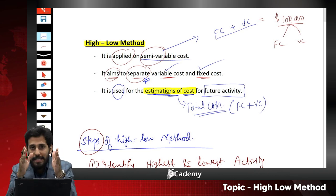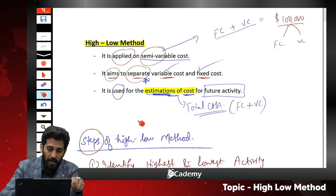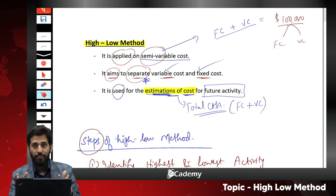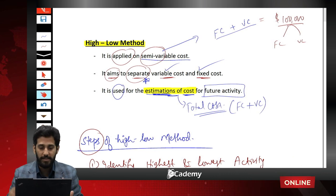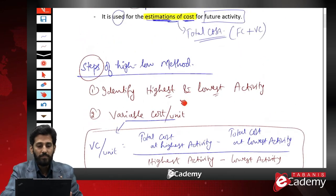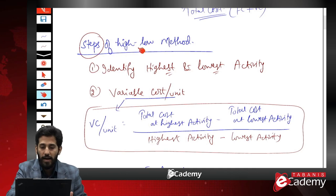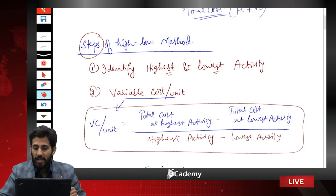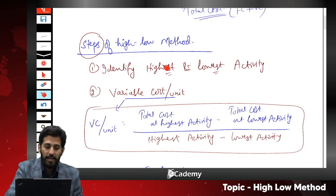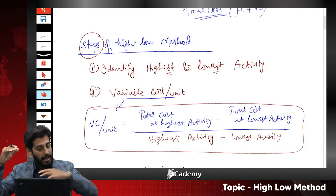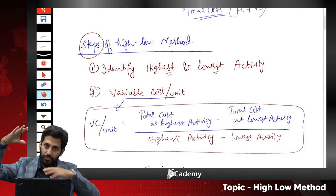There are a series of steps for the high-low method. Do not consider it an inferior topic — it is examinable and included as identifiable content in your syllabus guide. Step one: identify the highest and the lowest activity level. You need to identify the highest and lowest — not higher or lower — the extreme top and the extreme lowest. This is a limitation of the high-low method: it ignores other activity levels.